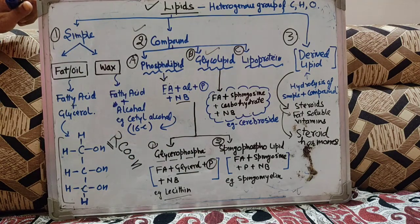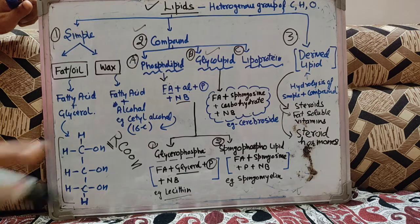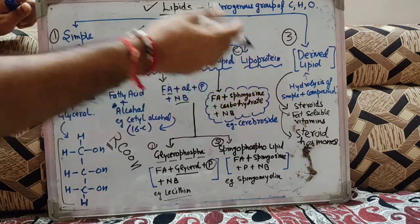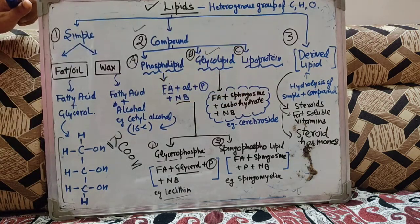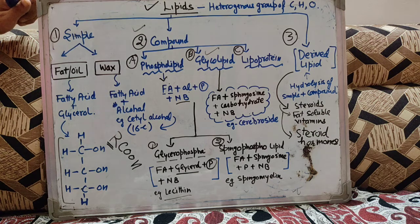तीसरा example है हमारे पास lipoprotein. Lipoprotein जो है lipid and protein से बने होते हैं. Lipoprotein का function क्या है — ये carrier है lipids के, lipids को carry करने का काम lipoproteins करते हैं. Examples हैं: chylomicron, HDL (high density lipoprotein), LDL (low density lipoprotein), VLDL, और fatty acid plus albumin — ये कुछ examples हैं जो कि हम lipoprotein में दे सकते हैं.